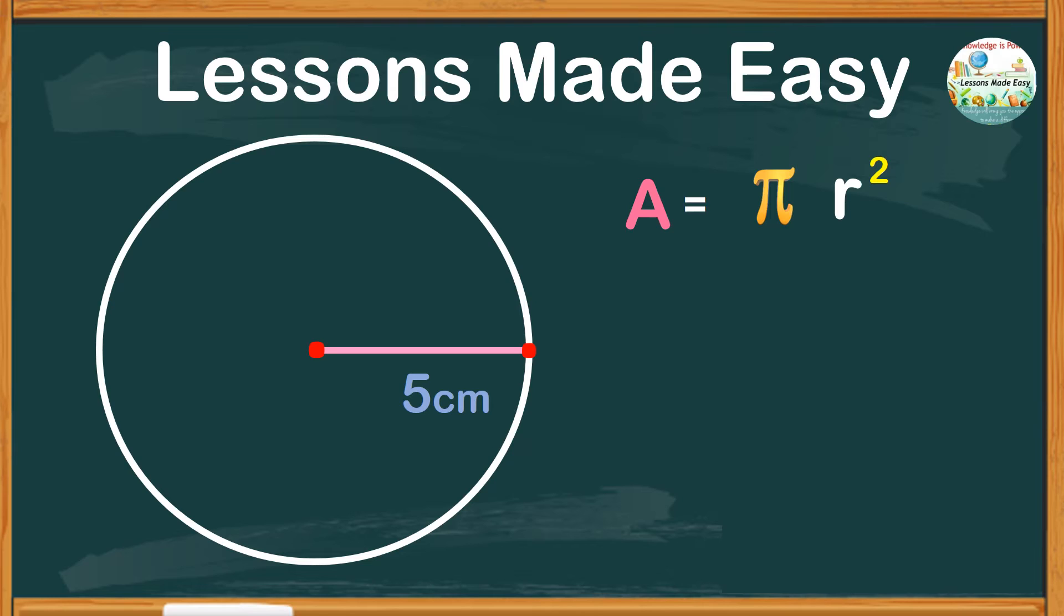But here is the struggle: some students would think of r squared as r times 2, which is entirely different. R times 2 actually means you double the radius. So if the radius is 5 centimeters times 2, you'll get 10. Basically, if you double the radius, you'll get the diameter.